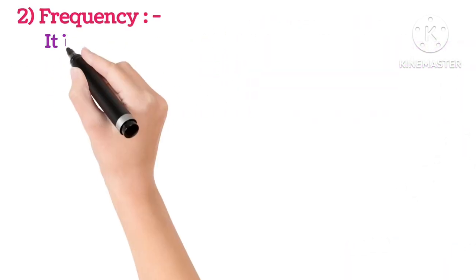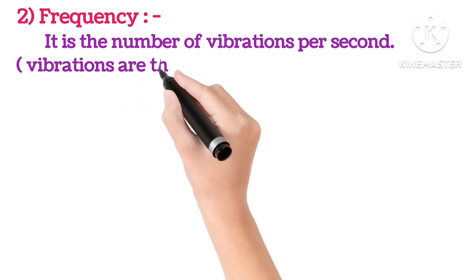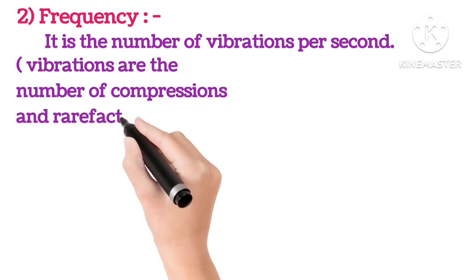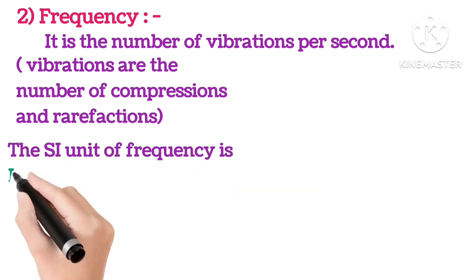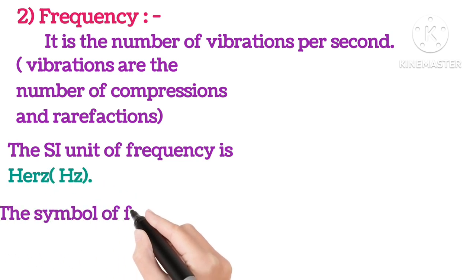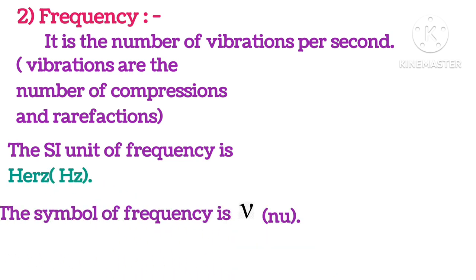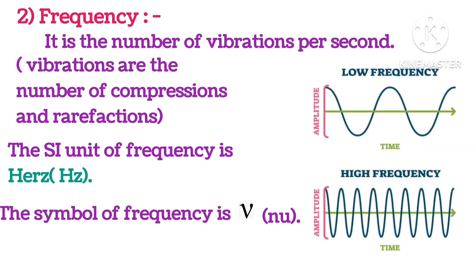Frequency is the number of vibrations per second. Vibrations are the number of compressions and rarefactions. The SI unit of frequency is Hertz and its symbol is nu (ν). As you can see, lower frequency has larger wavelength and higher frequency has shorter wavelength.